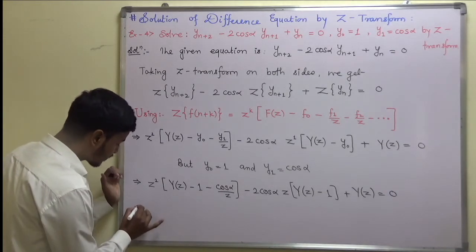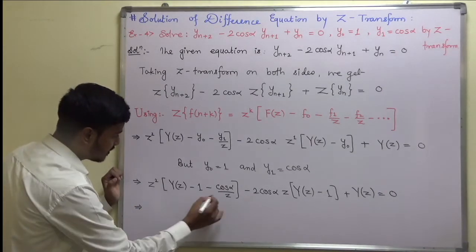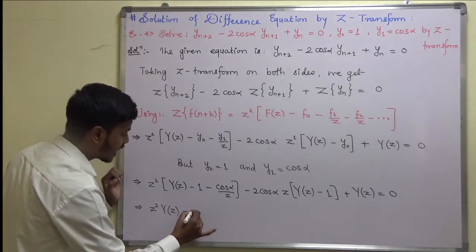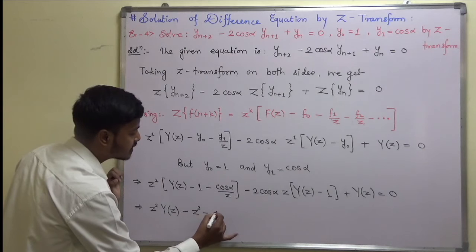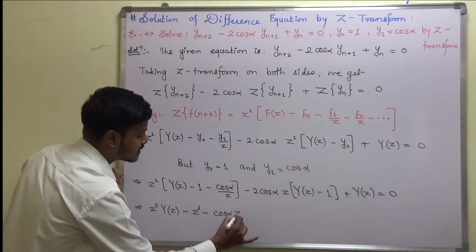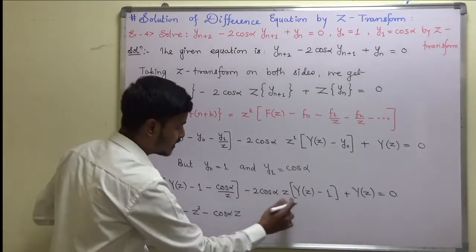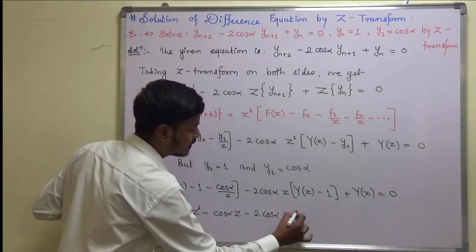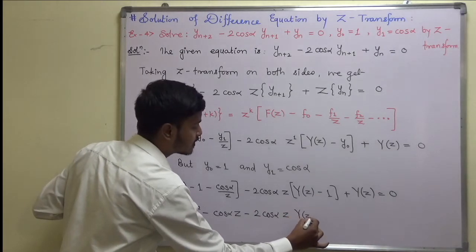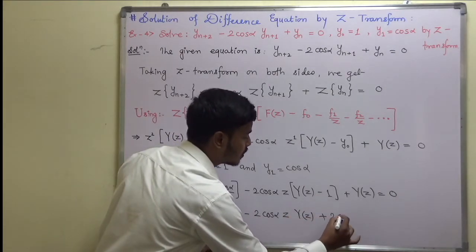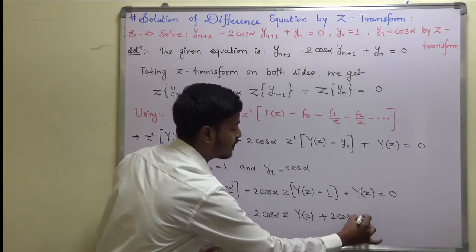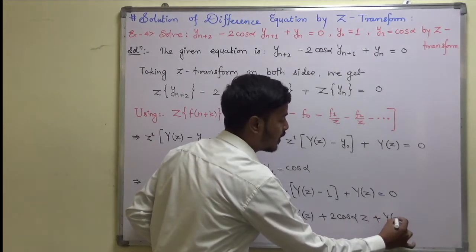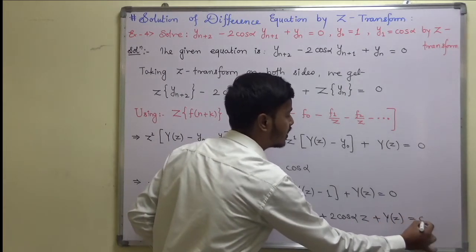Now just look here. Multiplying by z^2, I will be getting z^2·y(z) - z^2 - cos(alpha)·z. Now here it is minus 2cos(alpha)z times y(z) minus, which becomes plus 2cos(alpha)z. The next thing is y(z) = 0. It is okay up to this.